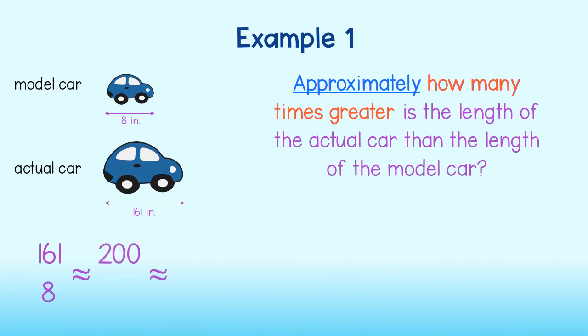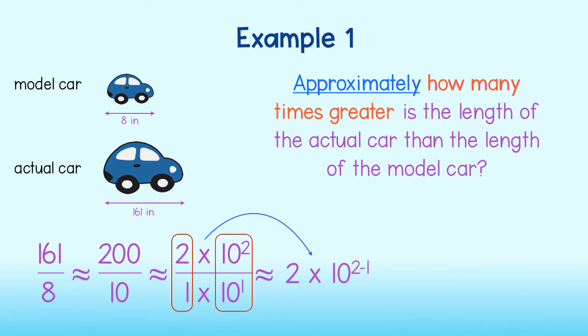161 rounds up to 200, which we can write as 2 times 10 to the second power. 8 rounds up to 10, which we can write as 1 times 10 to the first power. We can simplify this easily. 2 over 1 is simply 2. Remember, we are still going to be multiplying, and using our quotient property of exponents, we can subtract the exponents to get 10 to the first power. The actual car is approximately 2 times 10 to the first power, or approximately 20 times greater in length than that of the model car.